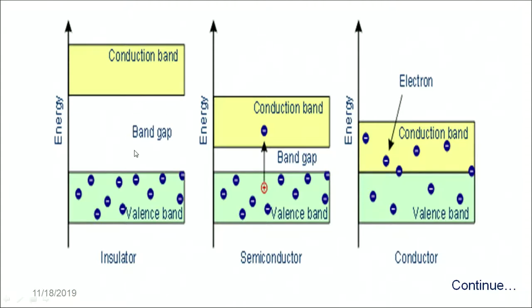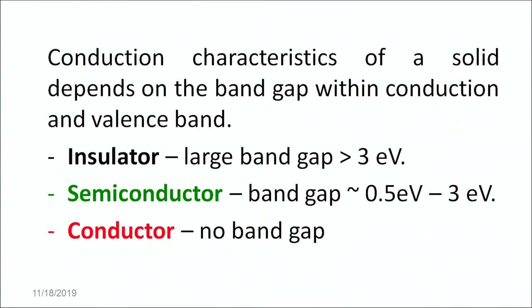This huge band gap is of the order of 3 eV or more. In case of a semiconductor, the band gap is of the order of 0.5 electron volts to 3 electron volts. On the other hand, in case of conductors, there is no gap between the conduction band and the valence band, and thus the conductivity of the material is large enough and the material classifies as a conductor. So, a large band gap greater than 3 eV corresponds to insulator, a band gap of the order of 0.5 to 3 electron volts classifies as semiconductor, whereas if there is no band gap, the material classifies as a conductor.